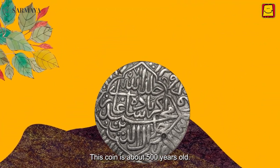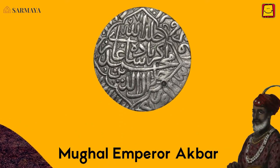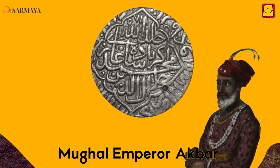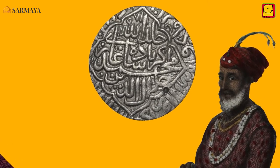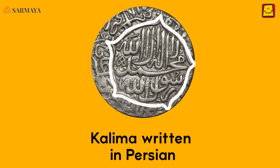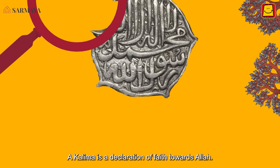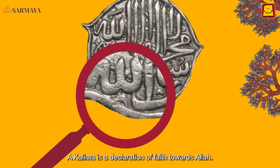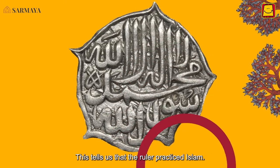This coin is about five hundred years old. It was issued by Mughal Emperor Akbar. The obverse contains writing in Persian. Experts say these words are known as the kalima. A kalima is a declaration of faith towards Allah. This tells us that the ruler practiced Islam.